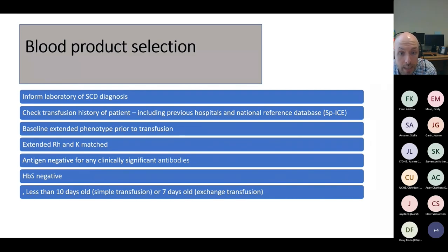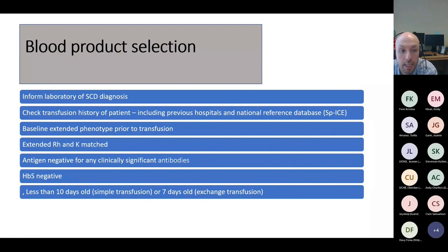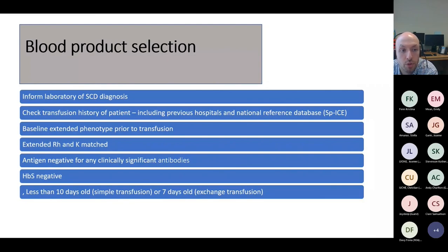It's important to ensure the patient has had a baseline extended phenotype done prior to transfusion, then to provide extended Rh and Kell-matched units as well as antigen-negative blood for any corresponding antigen, and to ensure the blood is hemoglobin S-negative. We generally try to use fresh blood: less than 10 days for simple transfusion or less than seven days for exchange, though we can be a little lenient when it's difficult to find blood for patients.